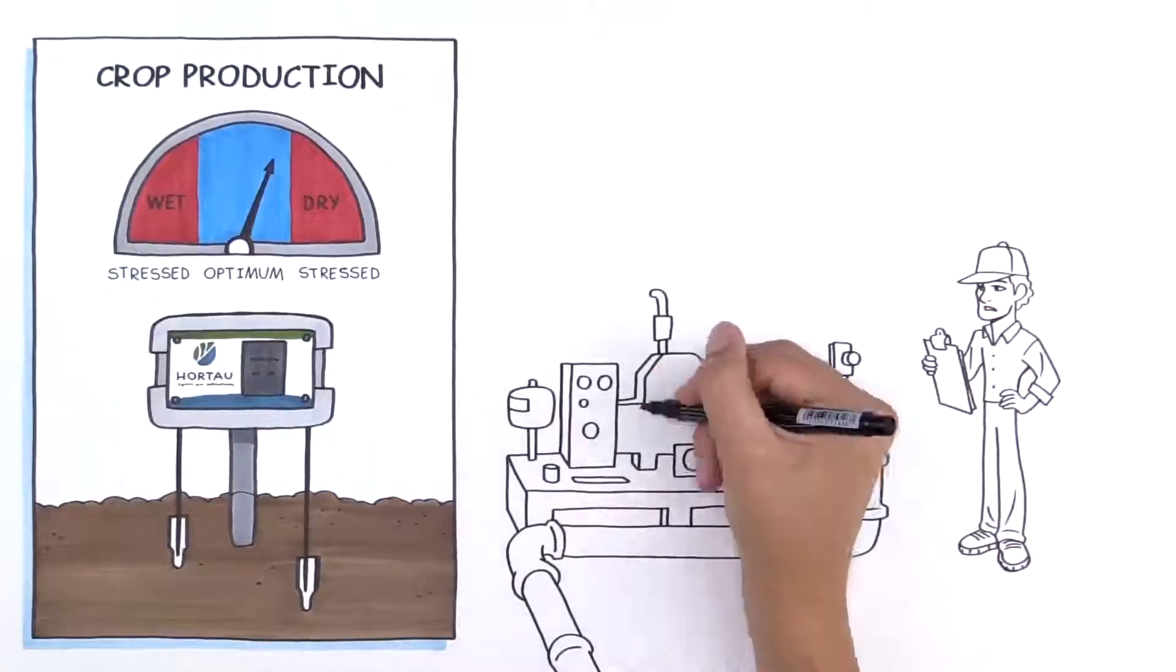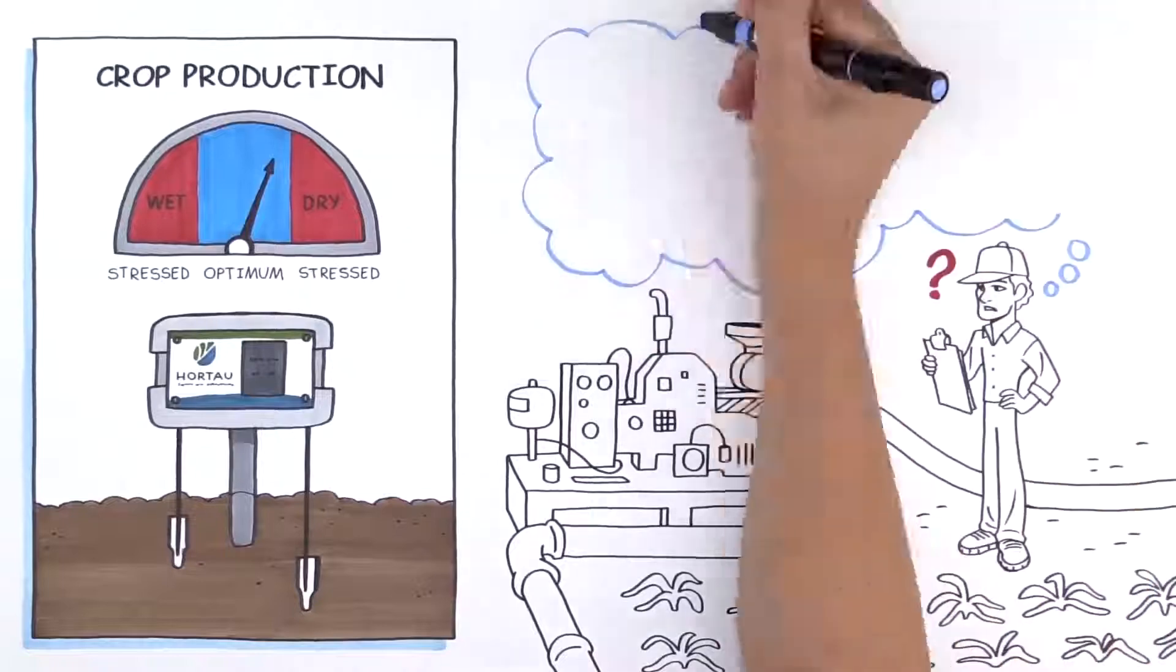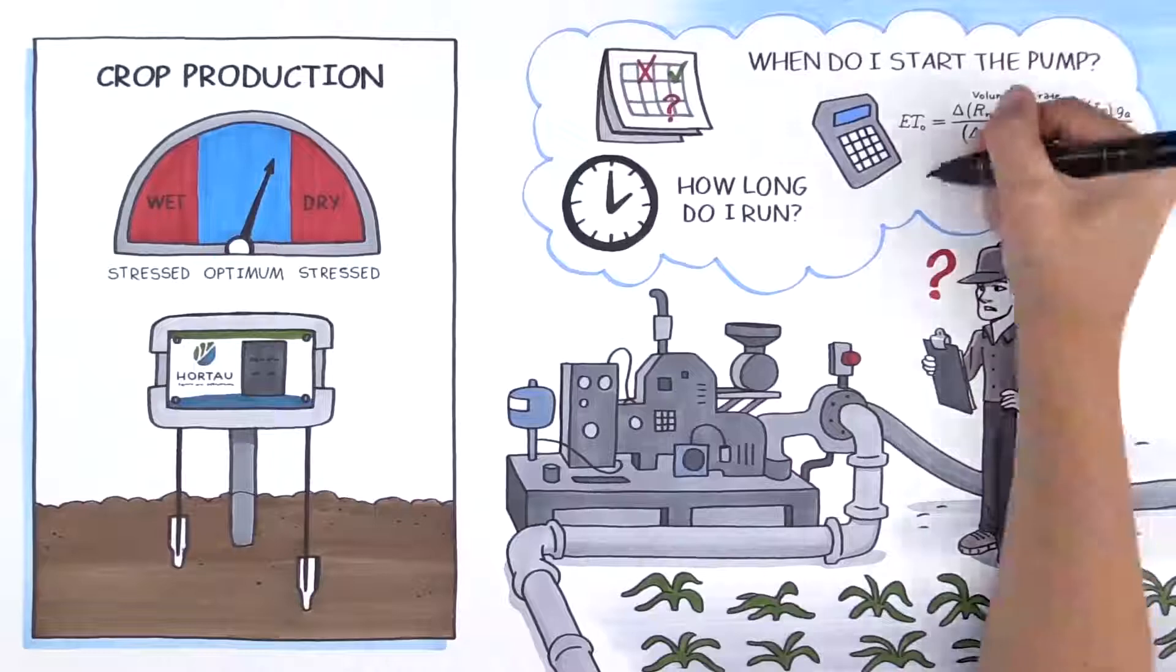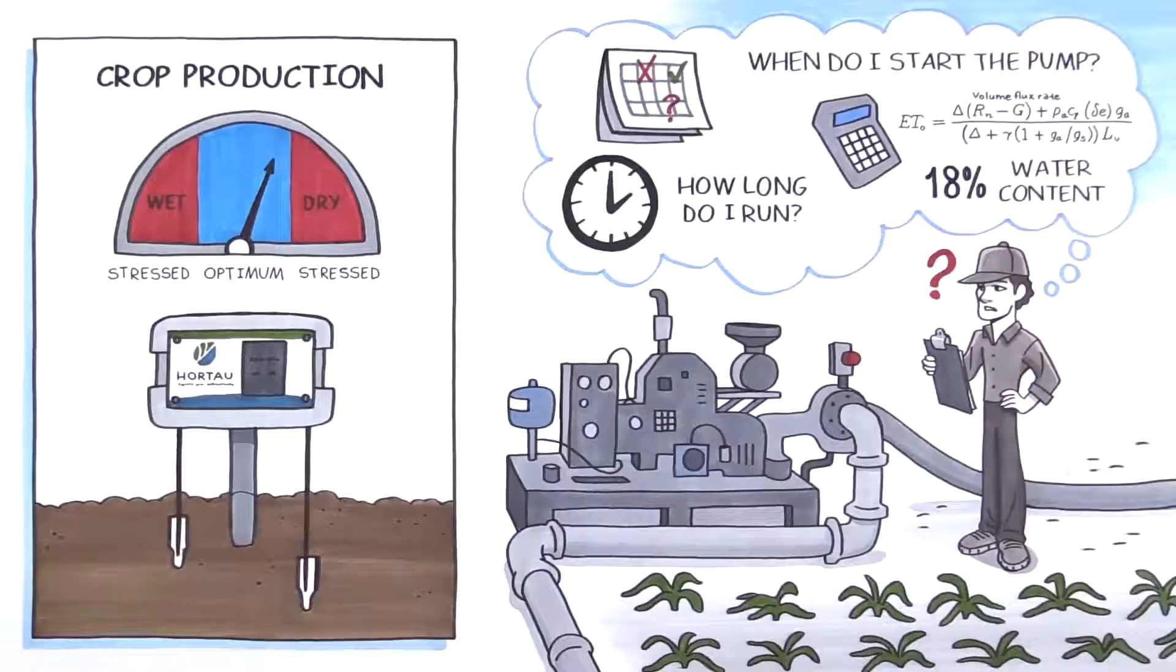Traditionally, irrigation practices focused on indirect methods to guesstimate needs of the plant. Indirect measurements such as ET calculations and measuring water content are flawed in that they require updated calculations or are affected by weather or soil conditions. At best, these measurements only provide guesstimations or a percentage of water in the soil.